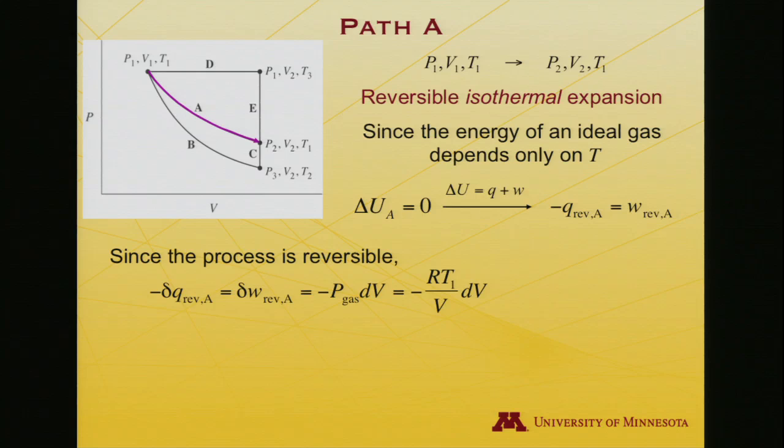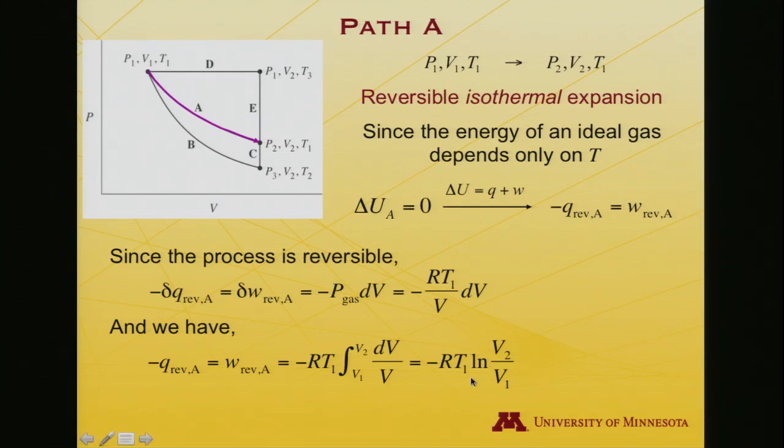Because the process is reversible, the external pressure, which is going to dictate how much work is being done by the gas, is given by the ideal gas law itself. That is, it's going to be equal to RT over V, and I'll keep the 1 here to emphasize it's T1, the same temperature as the initial and final states. And when I solve the integral to get the work, it is -RT1 ln(V2/V1).